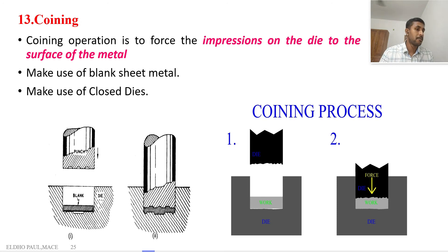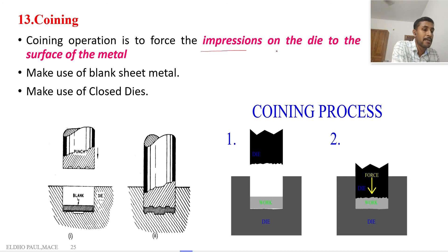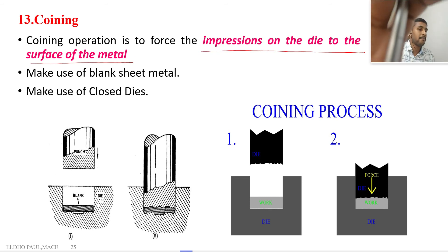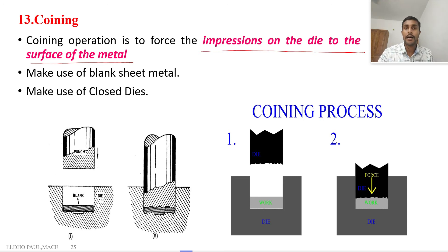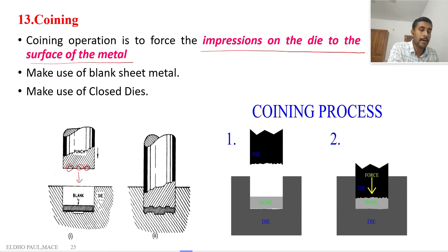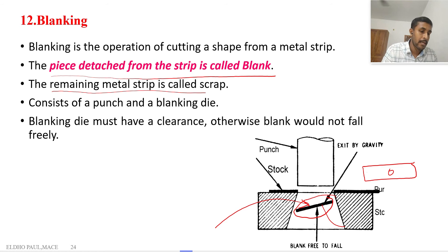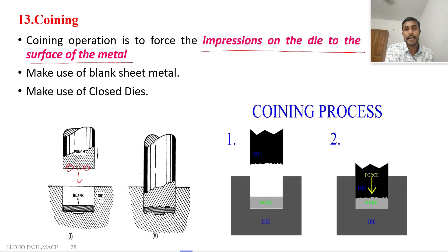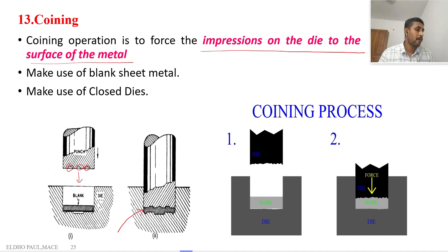The coining operation is used to make impressions on the surface of a workpiece. We can make very minute impressions by forcing the die against the workpiece. A blank — produced by the blanking process — is kept inside the die, and when we force the punch against the blank, we deform it to create the final product with impressions and projections. This is the coining process.